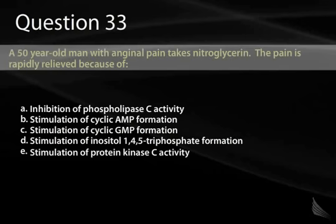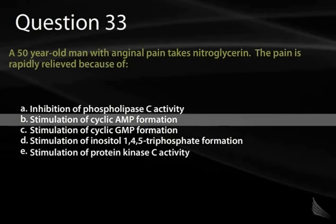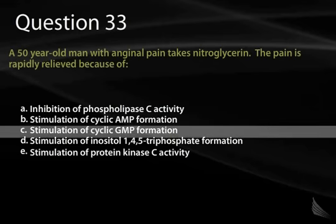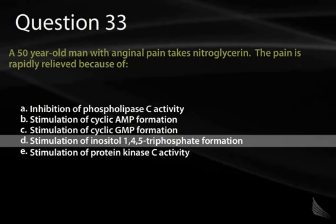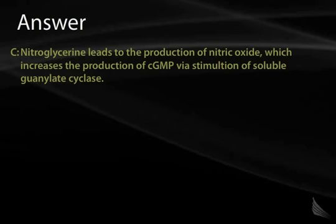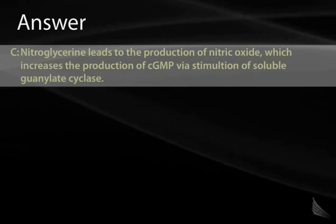Question 33. A 50-year-old man with anginal pain takes nitroglycerin and the pain is rapidly relieved because of: A, inhibition of phospholipase C. B, stimulation of cyclic AMP formation. C, stimulation of cyclic GMP formation. D, stimulation of inositol-1,4,5-triphosphate formation. Or E, stimulation of protein kinase C activity? Recall that nitroglycerin, like all nitrates, ultimately yields nitric oxide, which binds and activates soluble guanylate cyclase, producing cyclic GMP and leading to smooth muscle relaxation. The correct answer is C.